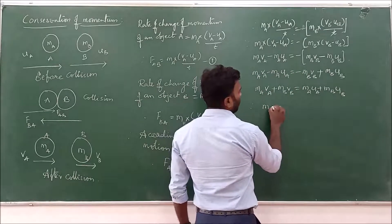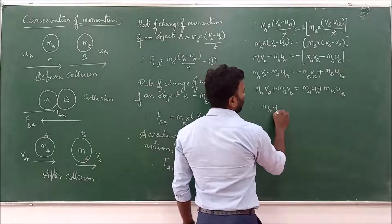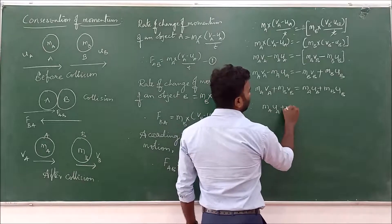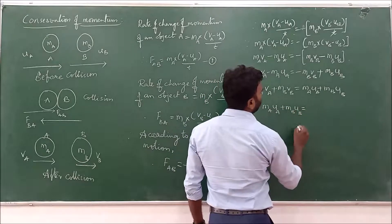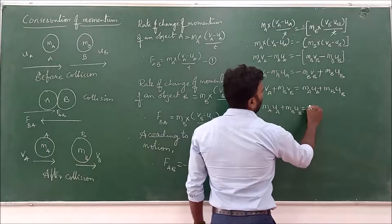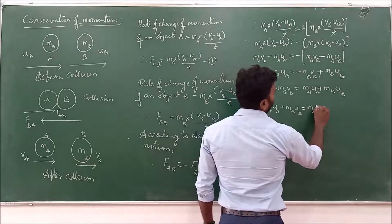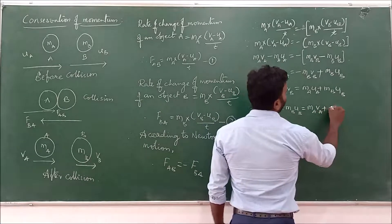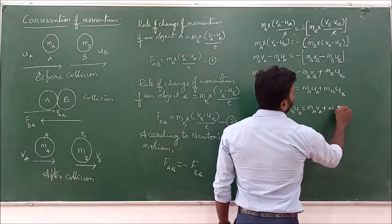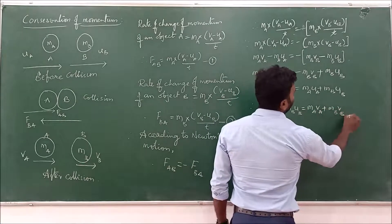Therefore: MA times UA plus MB times UB equals MA times VA plus MB times VB.